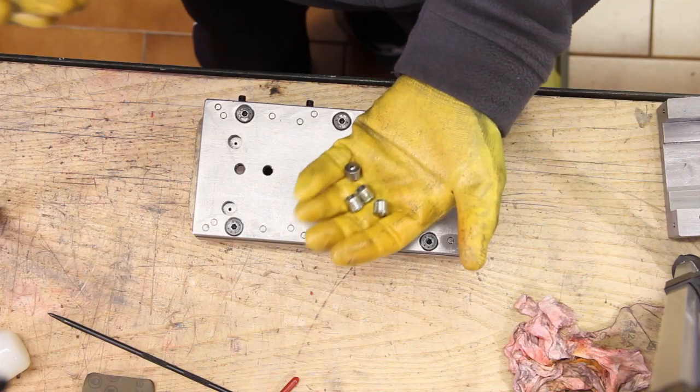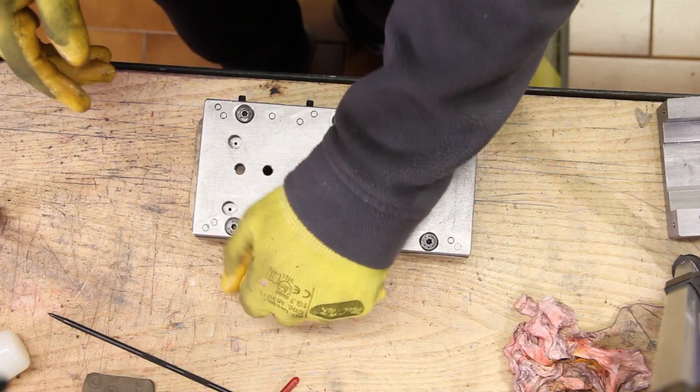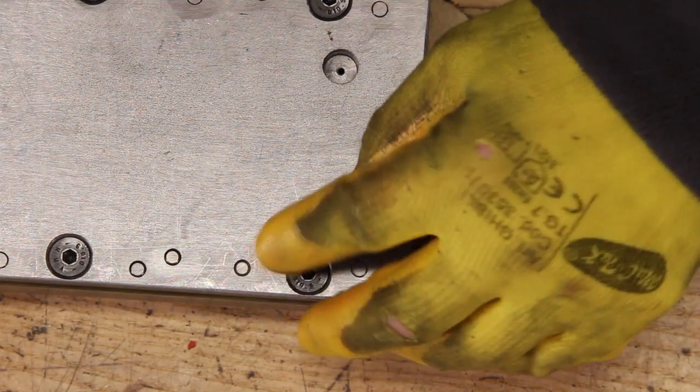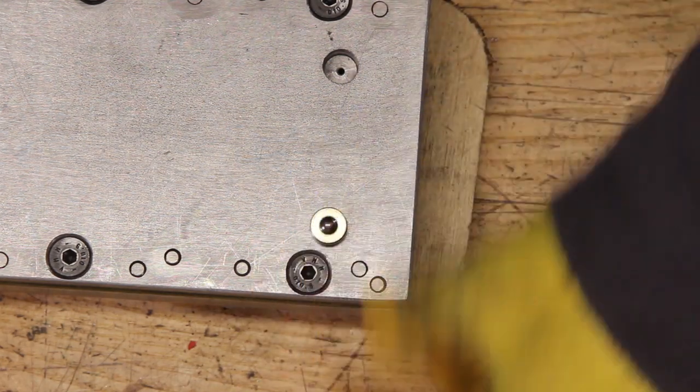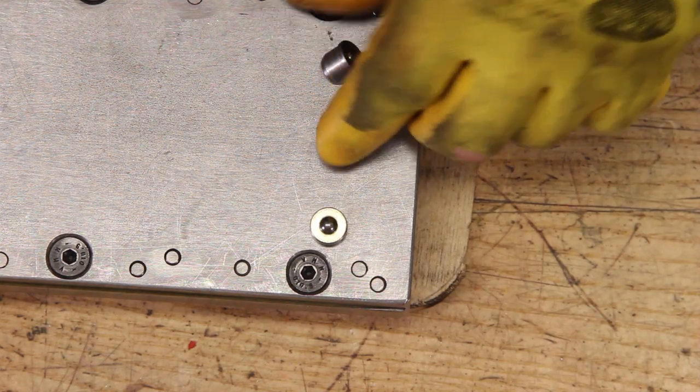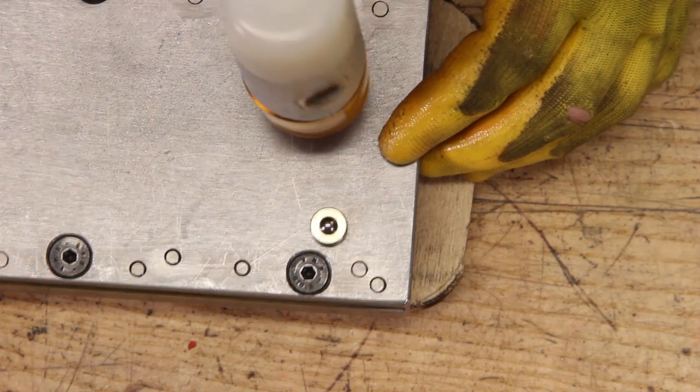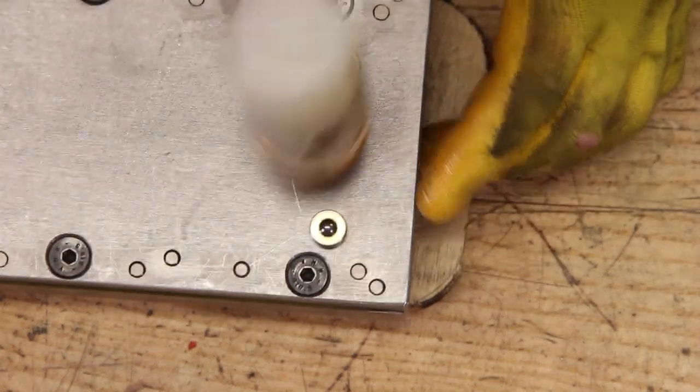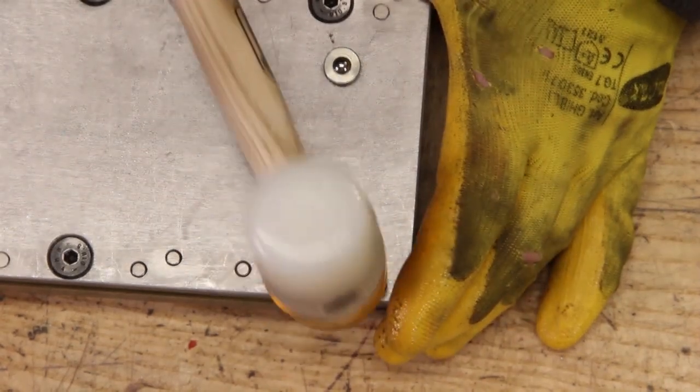After having cleaned up very well the holes, the ball oilers are installed. This requires them to be pressed inside the hole, so I used a nylon hammer to force them inside. An alternative tool is an intermediate aluminum mallet that is in turn hit with a classic steel hammer.